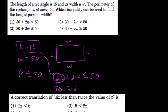So 30 plus two widths have to be less than or equal to the perimeter that they're giving us, which is choice number two.